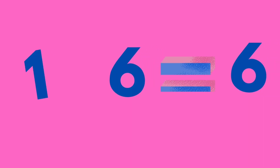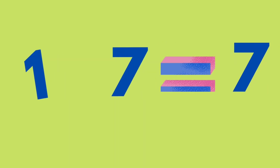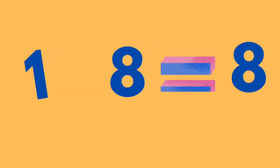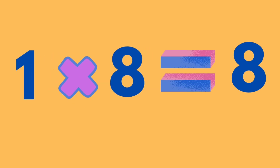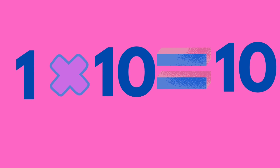1 times 6 is equal to 6. 1 times 7 is equal to 7. 1 times 8 is equal to 8. 1 times 9 is equal to 9. 1 times 10 is equal to 10. Let's see the summary.